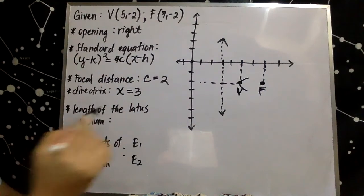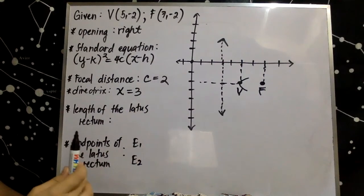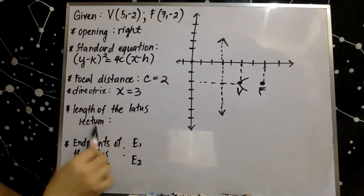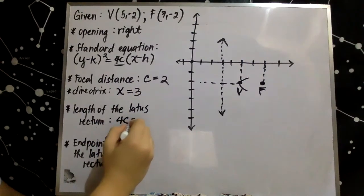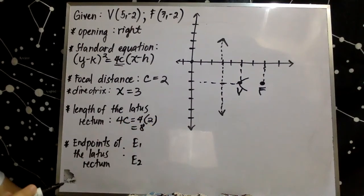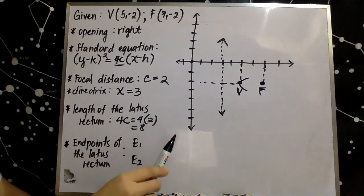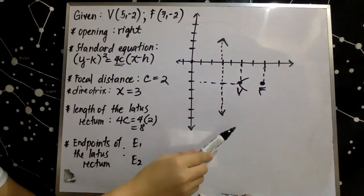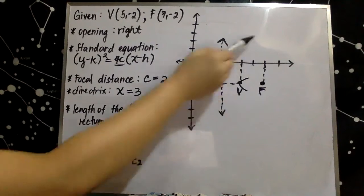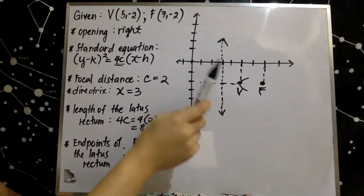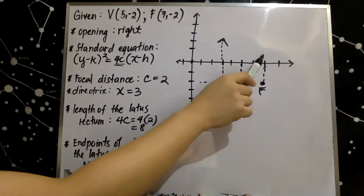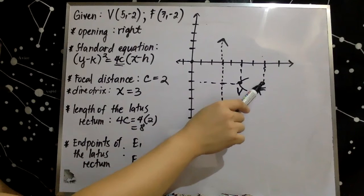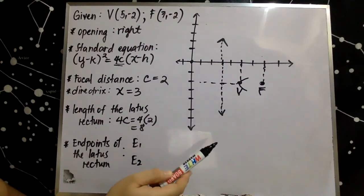Since we already have c equal to 2, we can also determine the length of the latus rectum, which is 4c in our standard equation. Substituting c as 2: 4c equals 4 times 2, so the length of the latus rectum is equal to 8. The latus rectum is a line segment connecting two points of the parabola, passing through the focus and parallel to our directrix. Since our latus rectum is 8 units, the distance from focus to each endpoint of the latus rectum is 4 units.